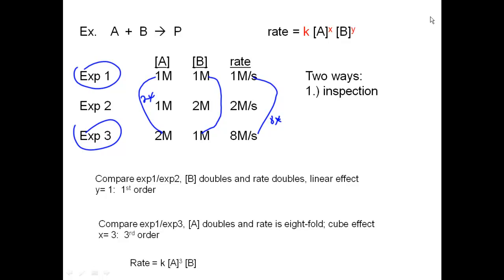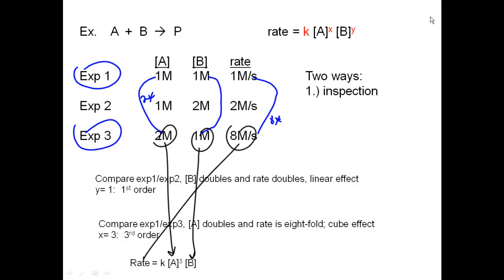If I wanted to get the overall rate equation, I still need to figure out k. I would take one set of data, plug in those values, and solve for k.